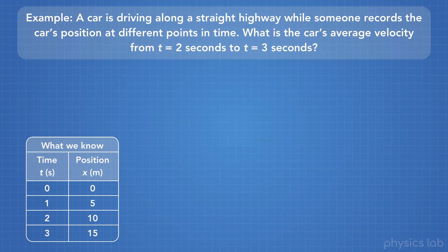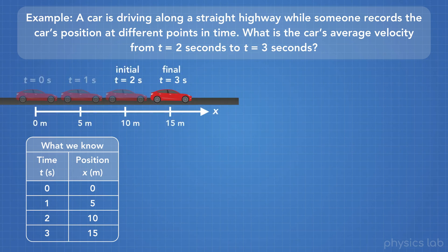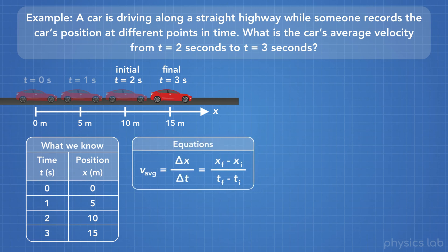But what if we are given both initial and final values? A car is driving along a straight highway while someone records the car's position at different points in time — that's where we get our table from. What is the car's average velocity from when time equals two seconds to time equals three seconds? We're given a table of the car's position at different times, and since we're specifically given an initial point and a final point, we'll use the second part of our equation.